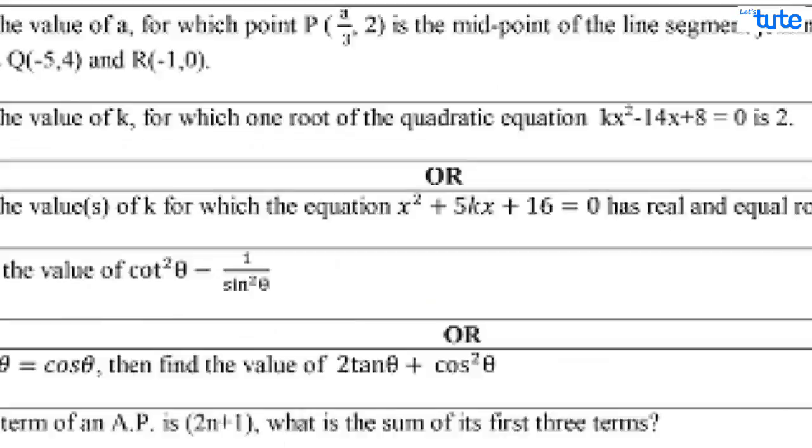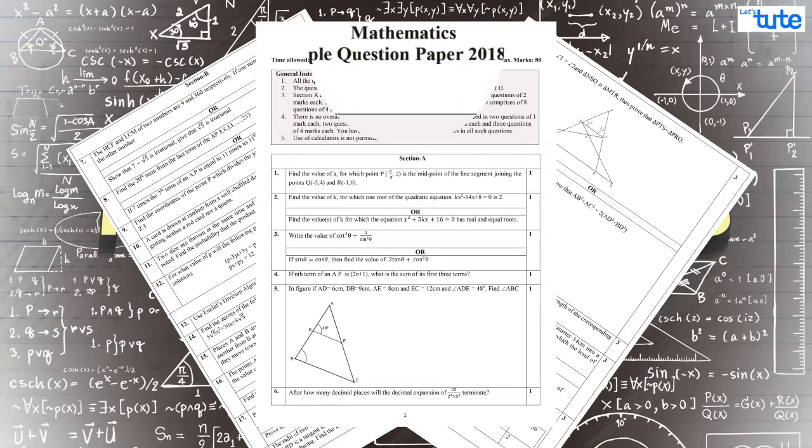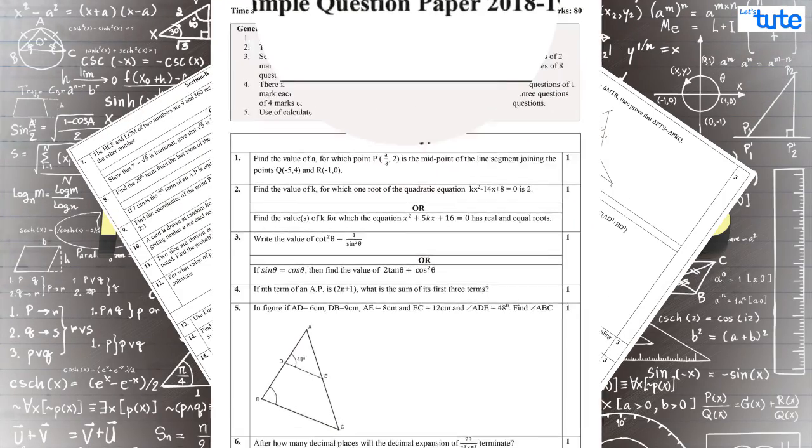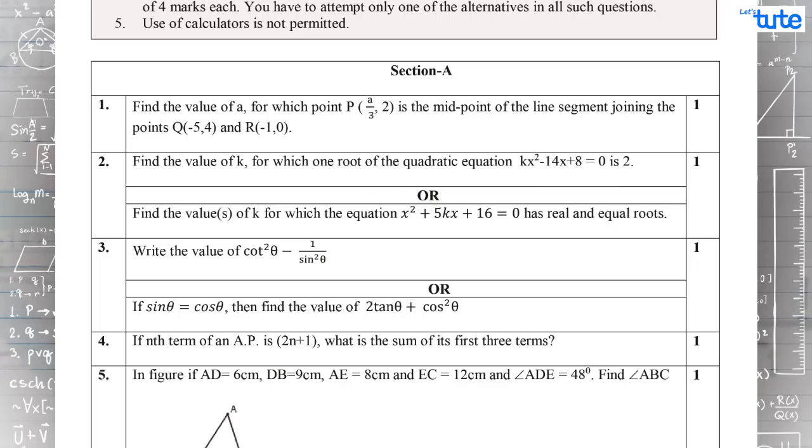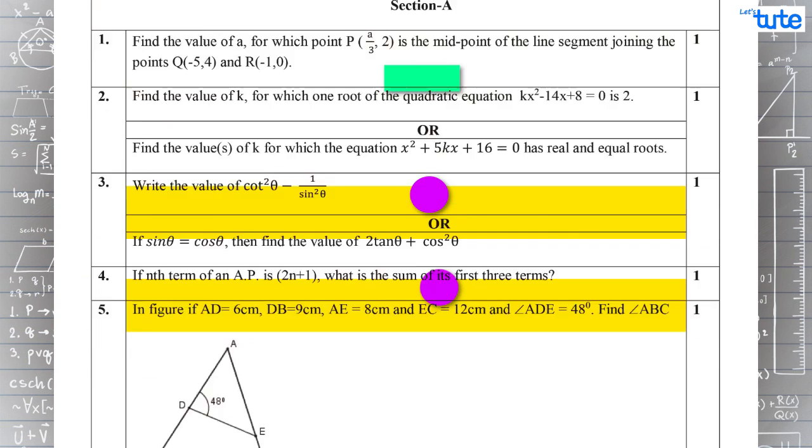Here we can see that we have the sample question paper of 2018-19. One of the most visible changes that we can see is there are internal options in section A and in section B.